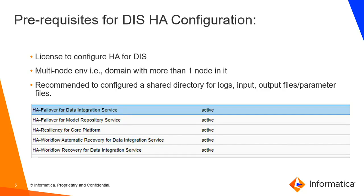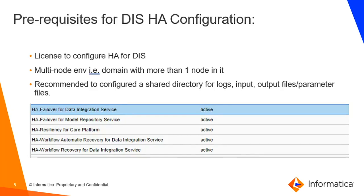A data integration service process will failover to the backup node in the following situations: when the DIS process fails and the primary node is not available, or the node is available but the DIS service process fails for some reason. In these two scenarios, DIS will come up on the backup node configured. Whenever DIS fails over from primary to backup, all running jobs should be smoothly restarted, which is why input/output files, source data, and parameter files should be placed on a common shared location — making a shared directory another key prerequisite.